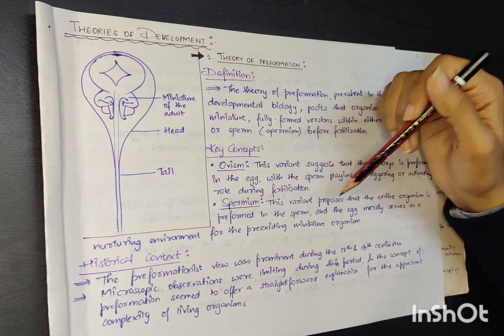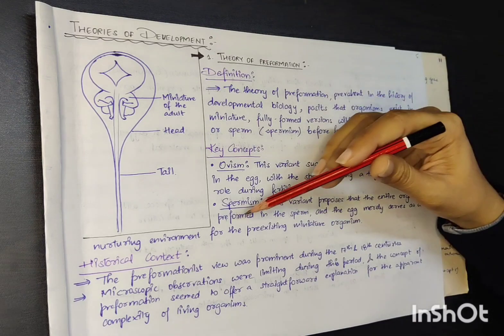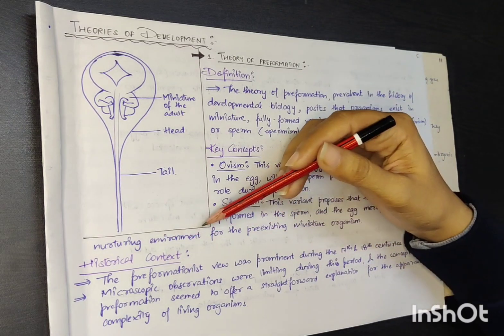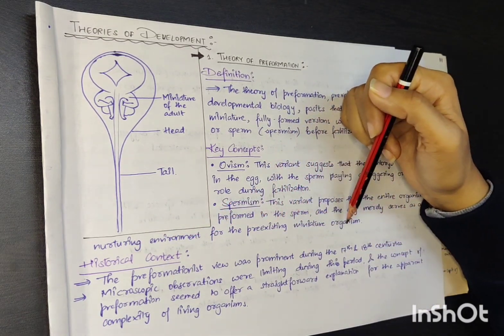In spermism, this variant proposes that the entire organism is pre-formed in the sperm, and the egg merely serves as a nurturing environment for the pre-existing miniature organism.